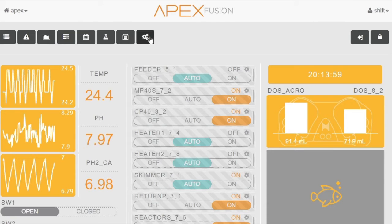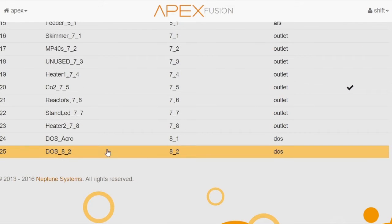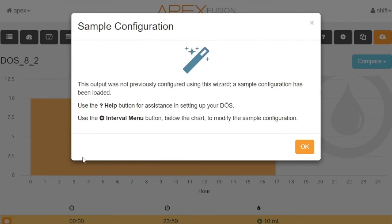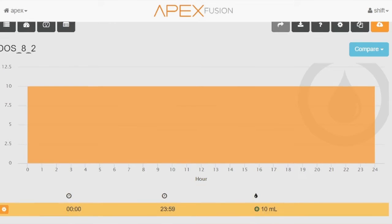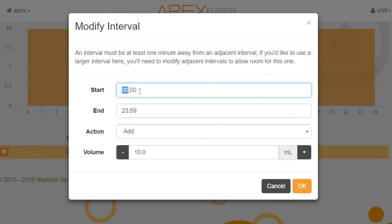To start, click on the gear and the little plug for your outputs. We're going to scroll down to dose 8-2, which is the second pump. Next, it shows as an example. We click the gear and we'll say modify interval. The start time is when you want the dose to start. So if you were doing alkaline calcium, you can say, okay, I'll dose this one for the first 12 hours, that one for the next 12 hours.